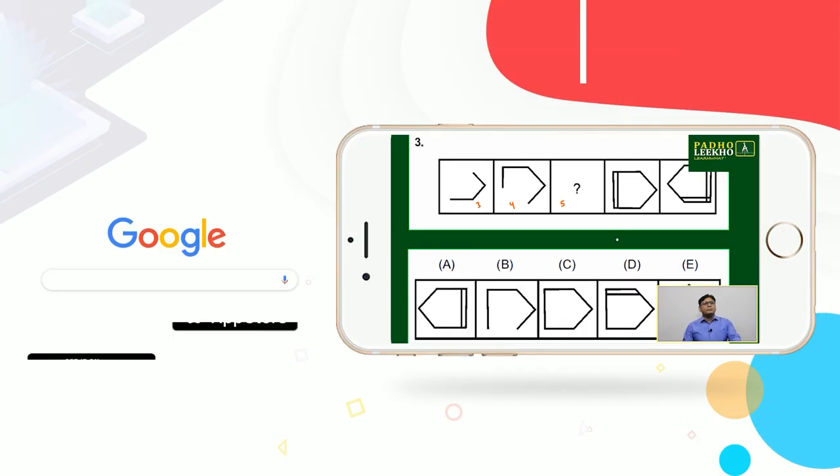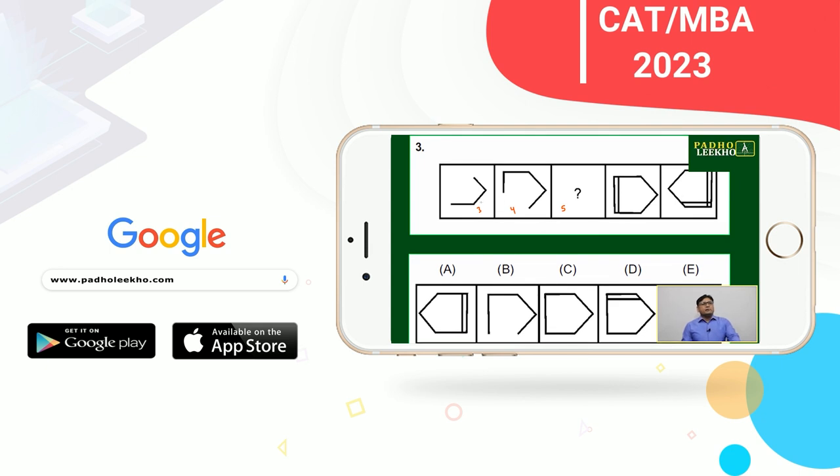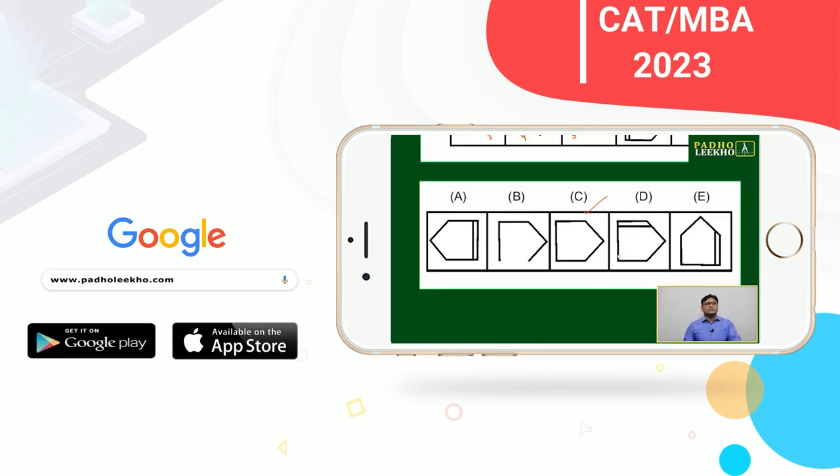This you can say is like a bonus question. Here the number of sides is three, here it is four. Next it must be five. You can mark option E.